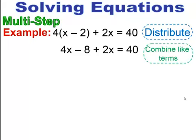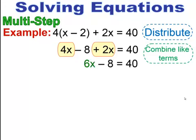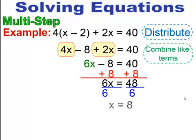Now that you've done the distributive property, you have multiple of the same variable, so you need to combine like terms. Combine 4x and plus 2x — they're on the same side, so just add their coefficients to get 6x minus 8 equals 40. Now it's a two-step equation: add 8 to both sides to get 6x equals 48, then divide through by 6 to get x equals 8.